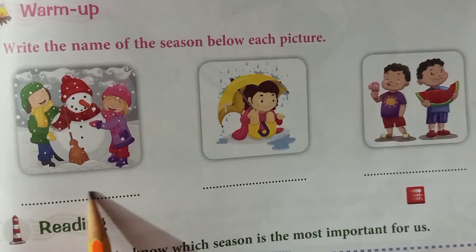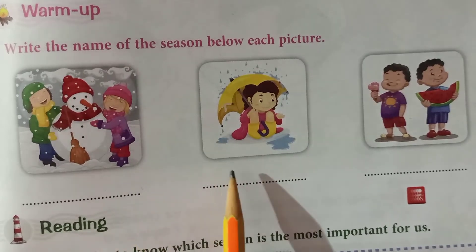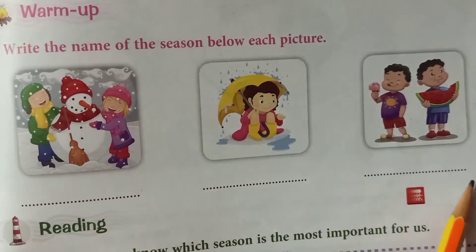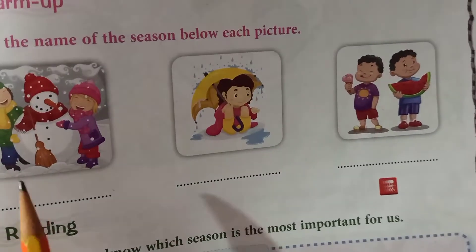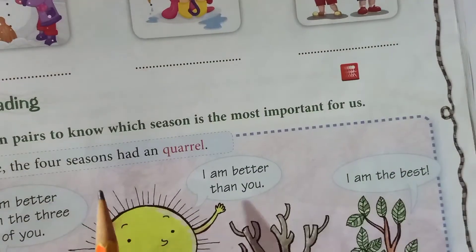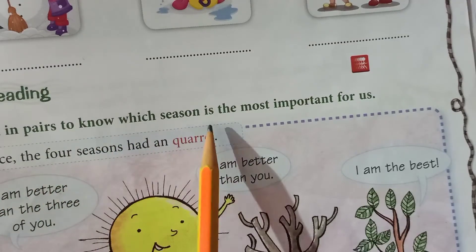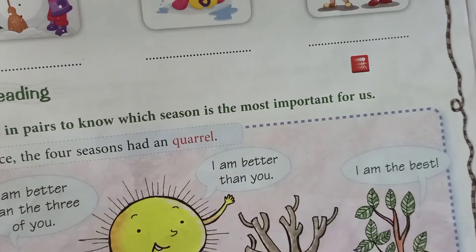Now let's start reading the chapter. Write the name of the season below each picture. Three pictures are given and you have to write the name of the season shown in each picture by looking at it carefully. You will write on your own — I will not tell you.